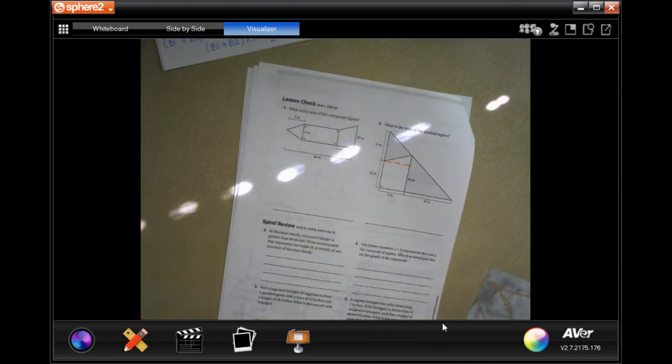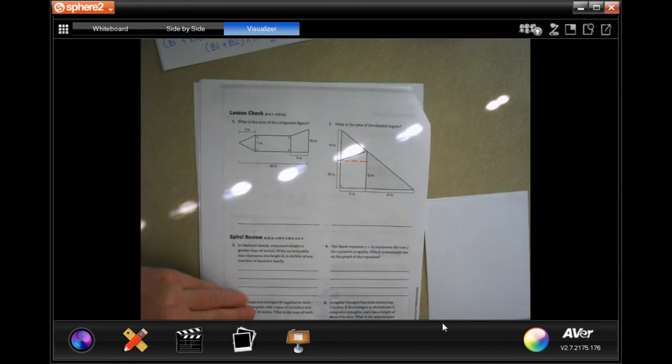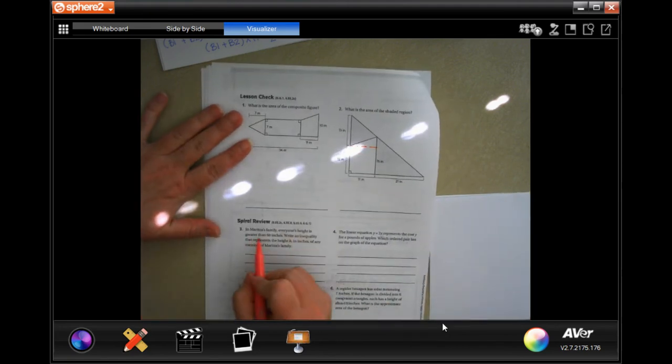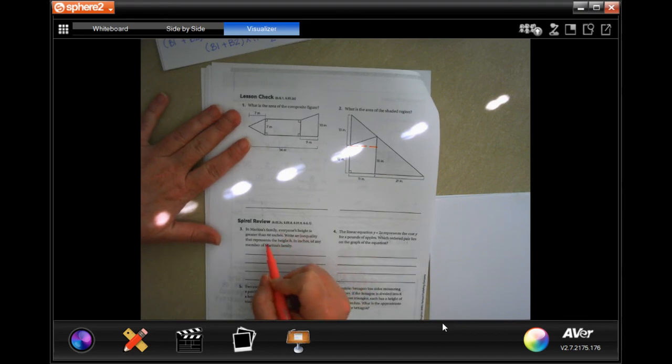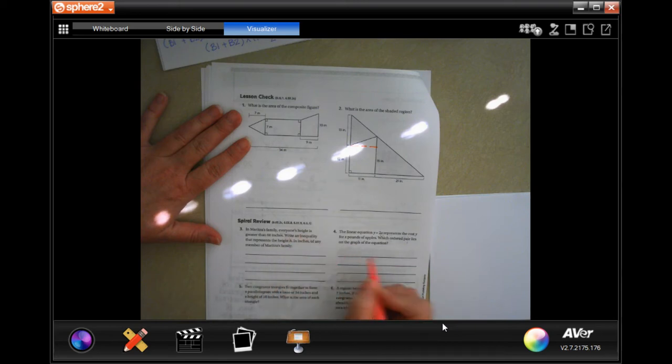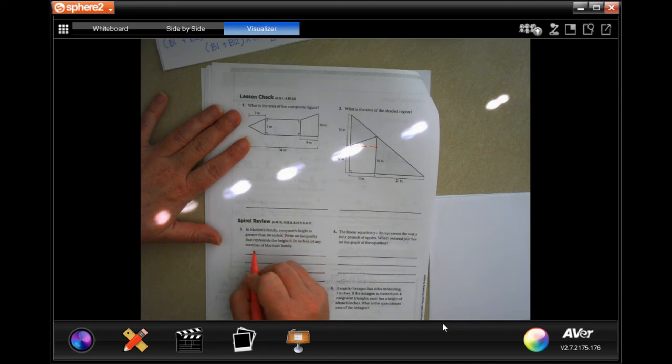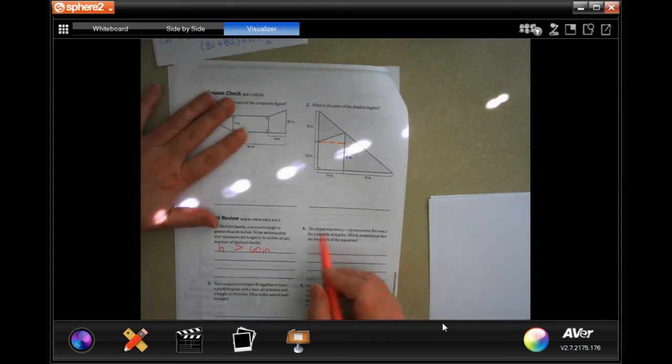We're going to go down and do this final review. That first one, number three, says in Marissa's family, everyone's height is greater than 60 inches. Write an inequality that represents the height in inches of any member of Marissa's family. Well, here's the height, and here's 60 inches, and everyone's height is greater than 60 inches. That was easy.